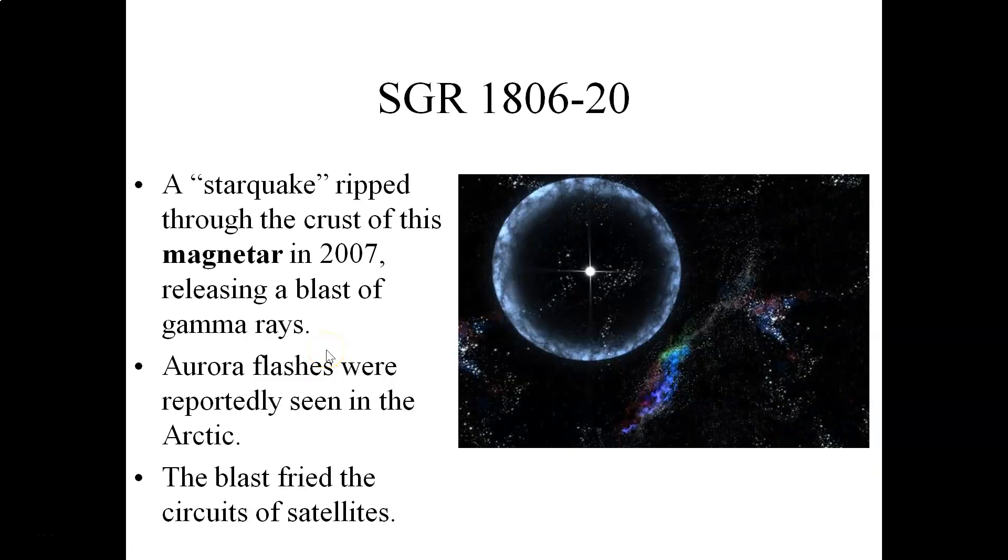Here is a famous example of a magnetar that is literally on the other side of the Milky Way galaxy from us. It's about 50,000 light years away. Back in 2007, a star quake basically ripped through the crust of this magnetar, releasing a blast of high-energy radiation in the form of gamma rays. The amount of radiation that was released by this incredible object was actually enough to directly affect the Earth, 50,000 light years away.